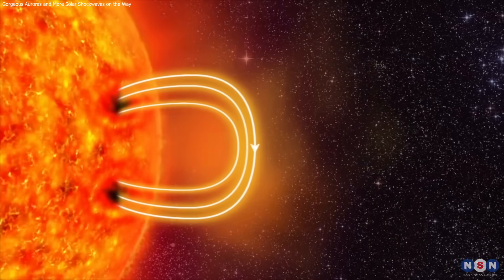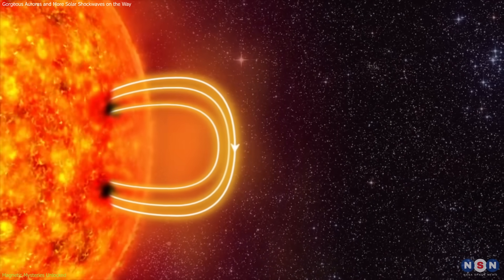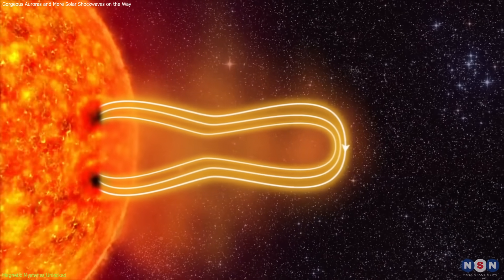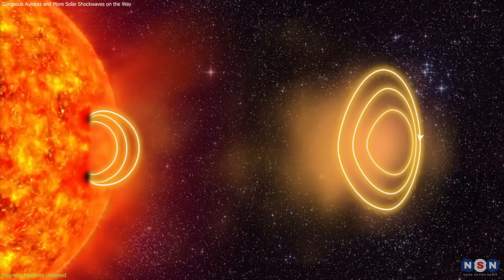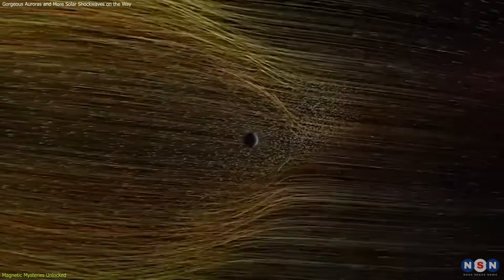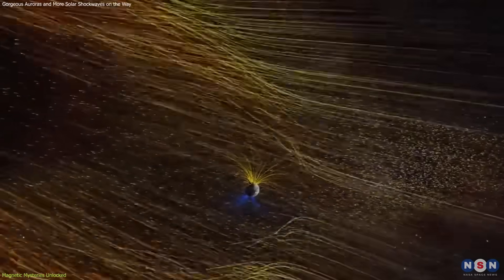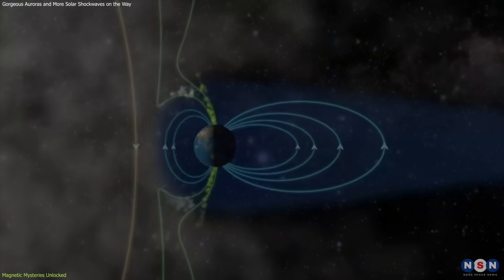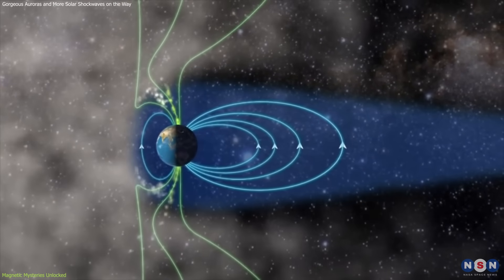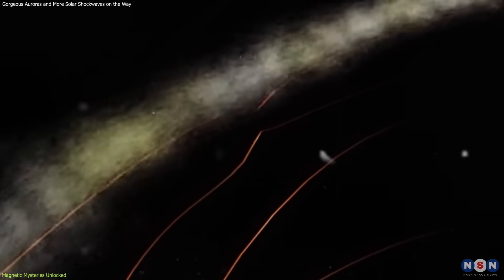The solar wind, composed primarily of electrons and protons, is ejected from the sun at speeds that can exceed a million miles per hour. As these charged particles approach Earth, they encounter the magnetosphere, a magnetic shield that envelops the planet and directs the solar wind toward the poles.